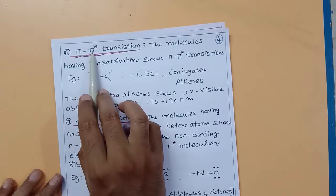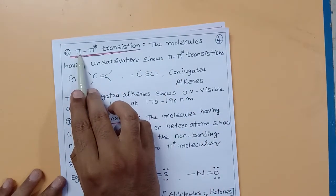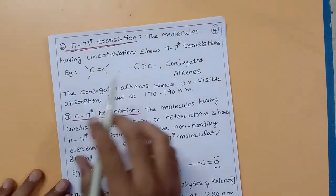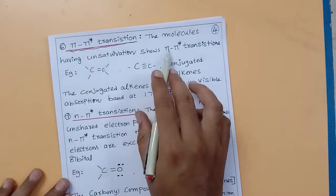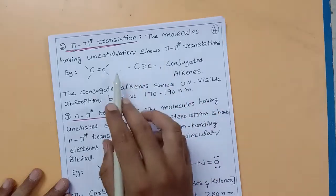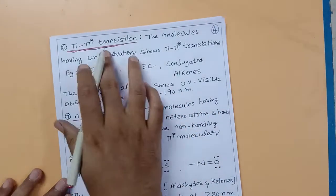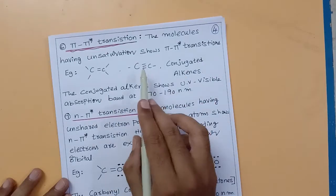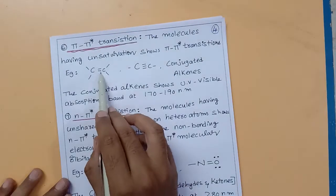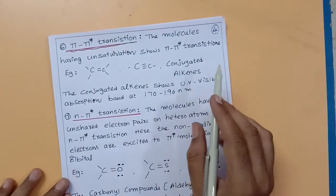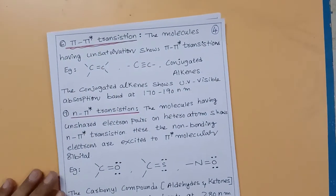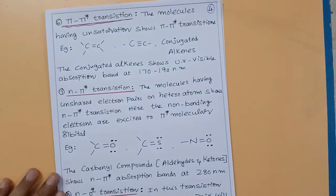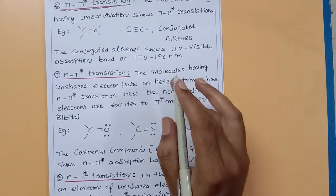The first important transition is pi to pi-star. Here, electrons in the pi bonding molecular orbital are excited to the pi-star anti-bonding molecular orbital. Molecules having unsaturation — such as carbon-carbon double bonds, triple bonds, conjugated alkenes, and alkynes — show pi to pi-star transitions. For example, conjugated alkenes show UV-visible absorption bands at 170 to 190 nanometers.